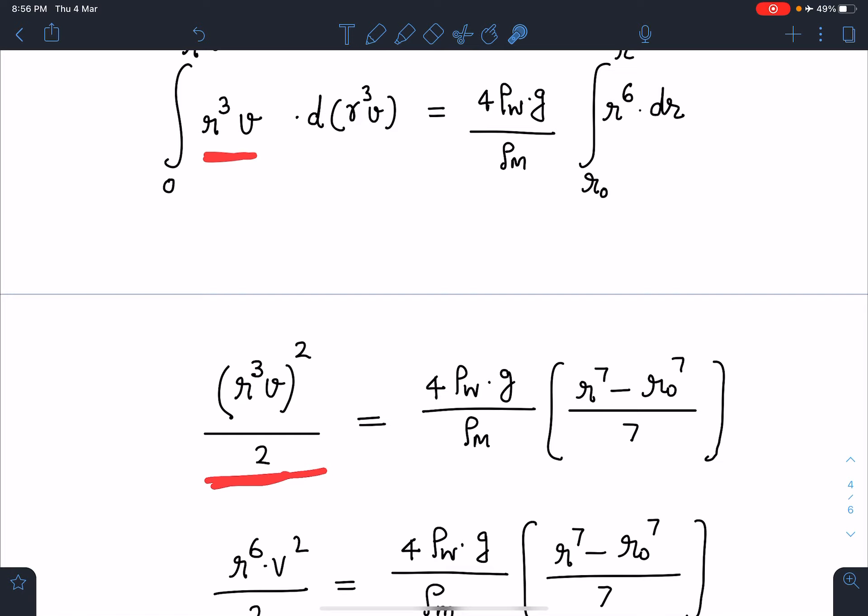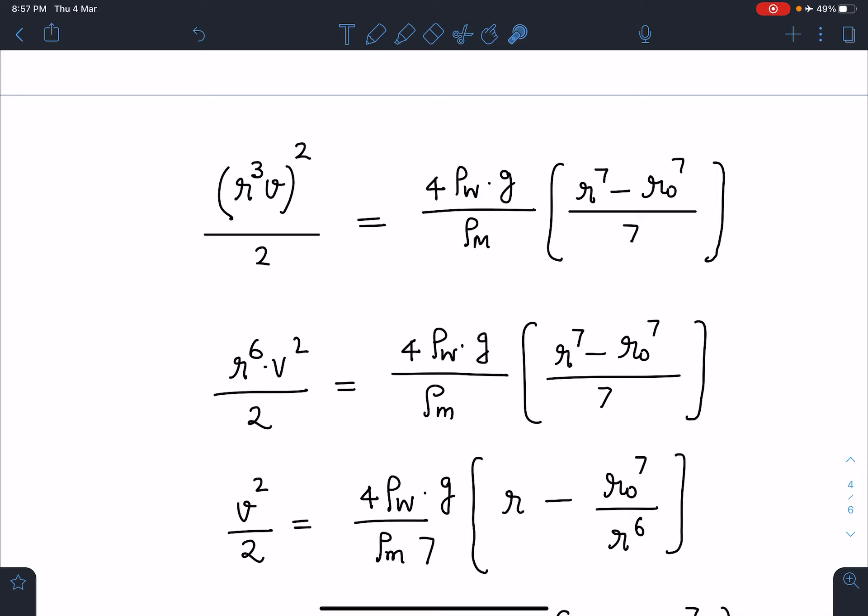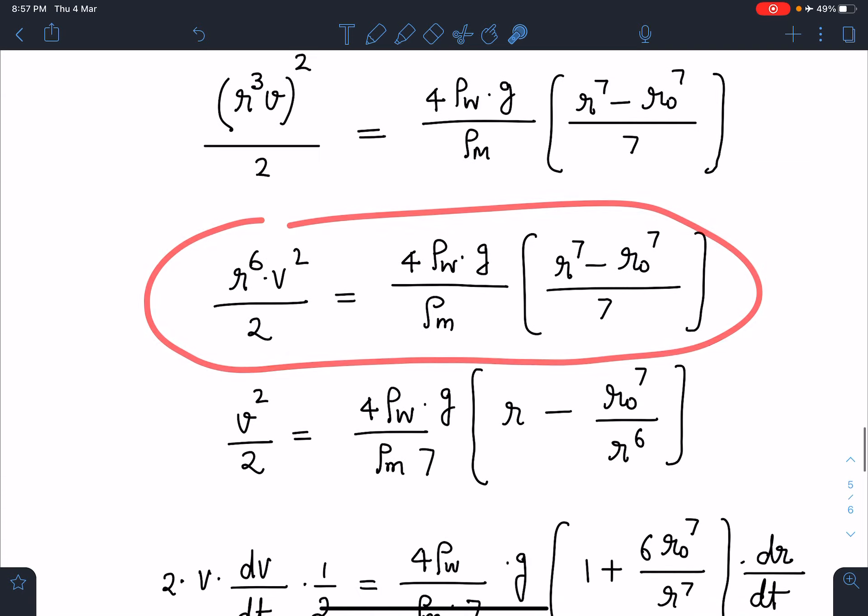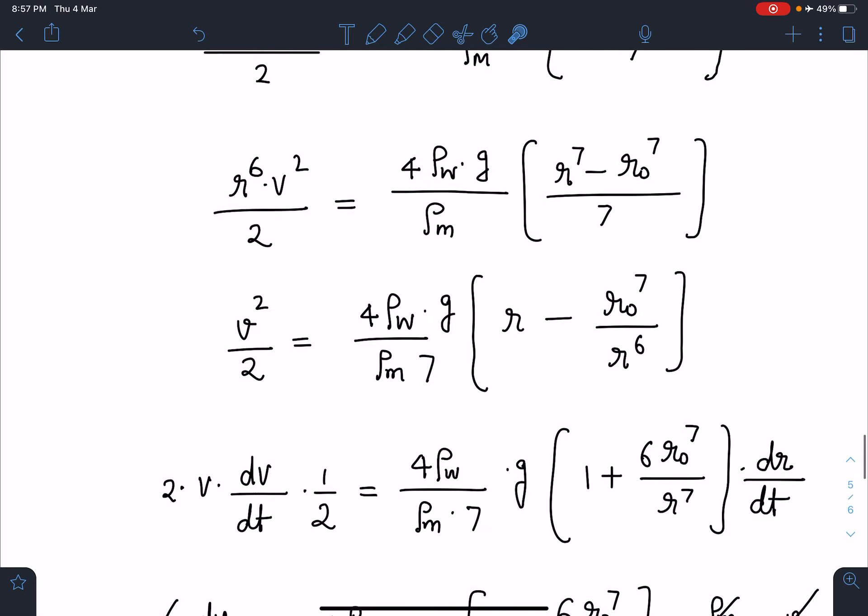This square by 2 and here constant terms I will take outside, and this will become (r^7 - r_not^7)/7. When I substitute the values, you will be getting v² equals some constant terms. Please remember I have to eliminate ρ_water and ρ_mist, it should not come in my answer. When I substitute, I'll be getting some constant times (r^7 - r_not^7)/r^6.